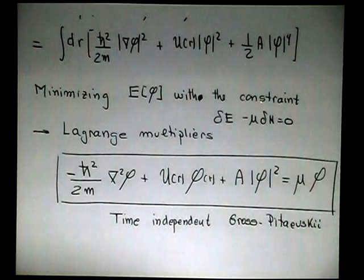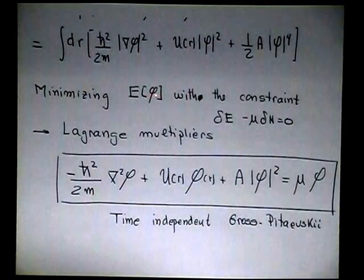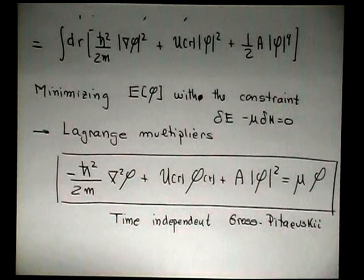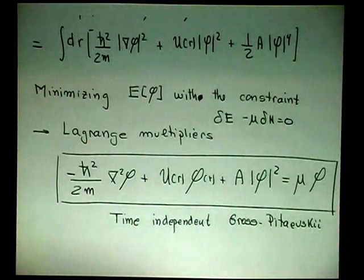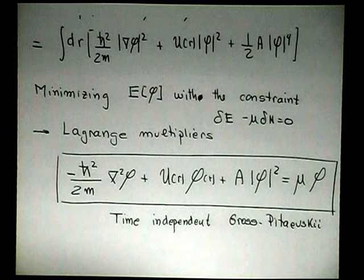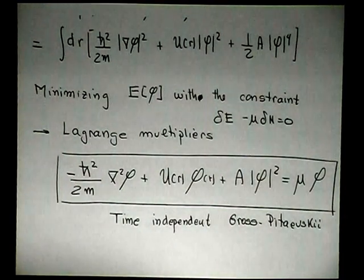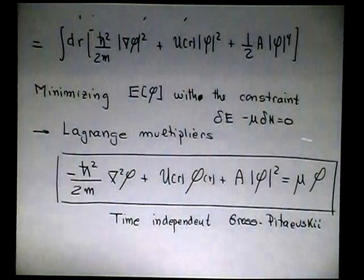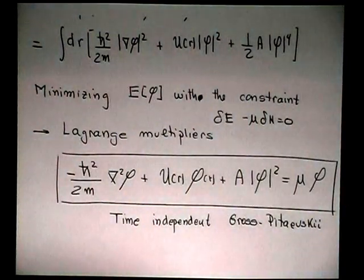So this is a constraint, and if I minimize it, taking this constraint using Lagrange multiplier that I'm sure you're very familiar with. Then I come with an equation, which is called Gross-Pitaevskii equation.